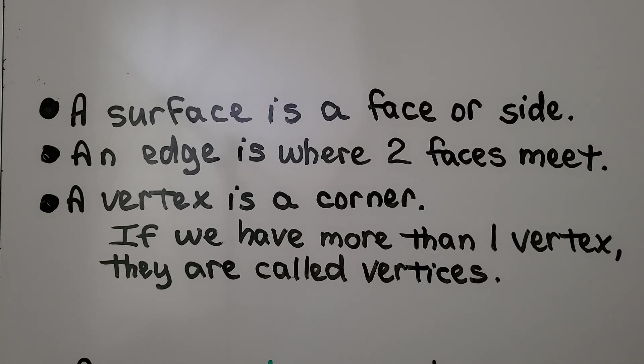A surface is a face or a side. An edge is where two faces meet. A vertex is a corner. And if we have more than one vertex, they're called vertices. We'll talk about this more throughout the video.